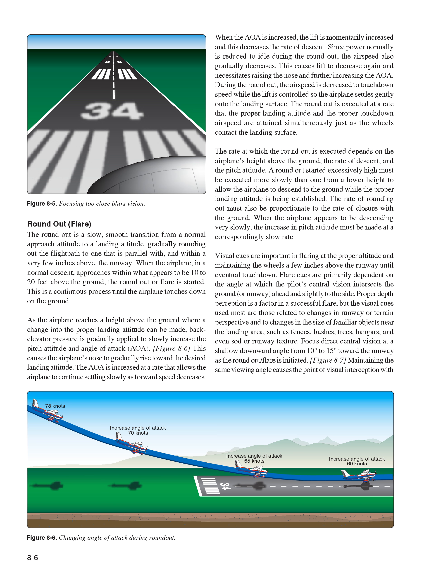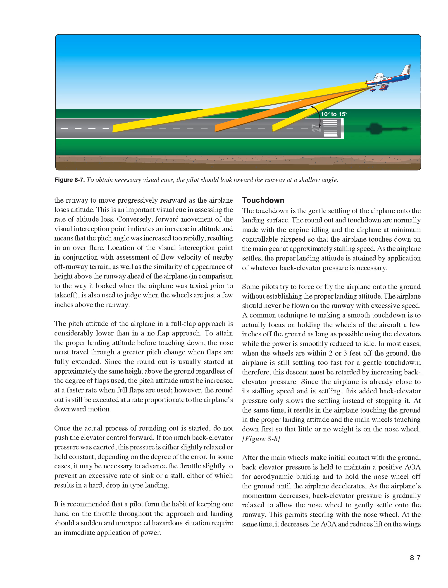The rate at which the roundout is executed depends on the airplane's height above the ground, the rate of descent, and the pitch attitude. A roundout started at excessively high altitude must be executed more slowly to allow the airplane to descend to the ground while the proper landing attitude is being established. Visual cues are important in flaring at the proper altitude and maintaining the wheels a few inches above the runway until eventual touchdown. Flare cues are primarily dependent on the angle at which the pilot's central vision intersects the ground or runway ahead. Proper depth perception is a factor, but the visual cues used most are related to changes in runway perspective and the size of familiar objects near the landing area—such as fences, bushes, trees, hangars, and runway texture.